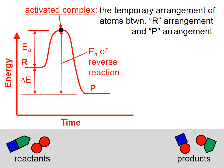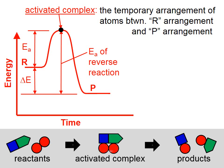We can see we still have two red circle atoms, one blue square atom, and one green arrow atom. The number of atoms we start with and their type, and the number we end with and their type are exactly the same — but they're bonded to different atoms at the end compared to the beginning. The activated complex could look like any number of things.